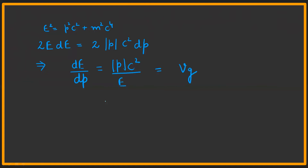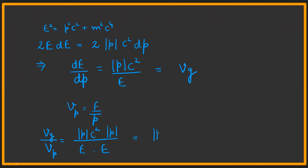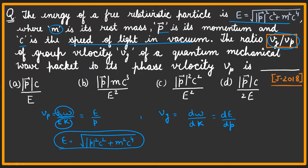Phase velocity is E/p. Now we find vg/vp by putting in the values: vg = pc²/E and vp = E/p. So vg/vp = p²c²/E², which is our answer — option number C is the correct answer.